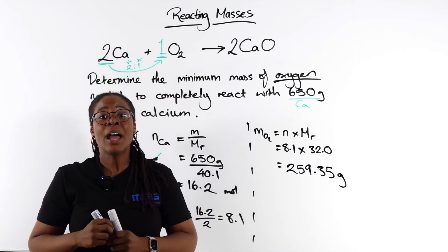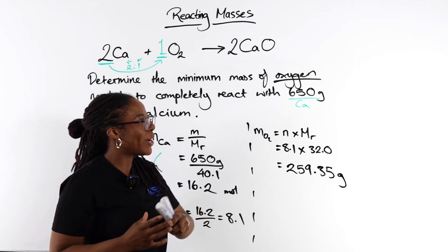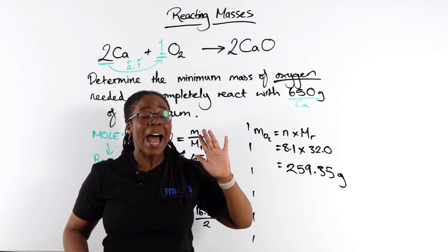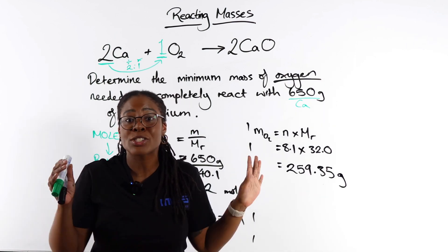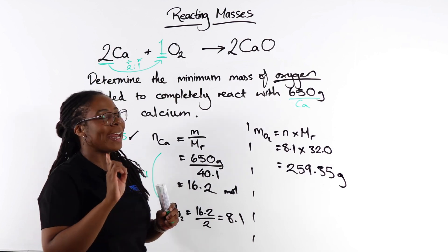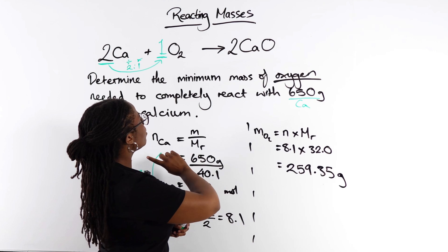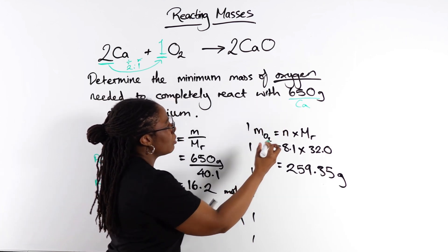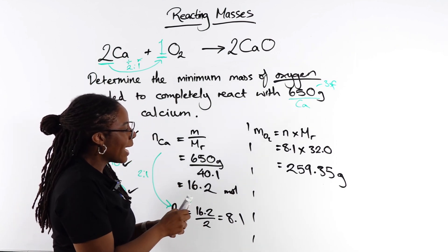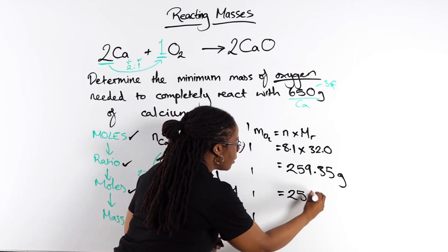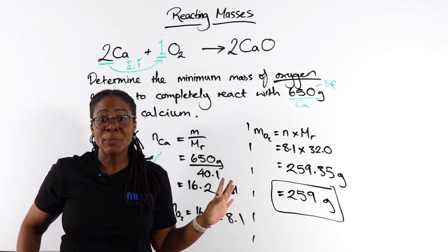The calculator gives 259.35. It's good practice to give your answer to an appropriate number of significant figures. We look at the least number of significant figures in the values given in the question — 650 grams is three significant figures. So the final answer is 259 g to three significant figures.